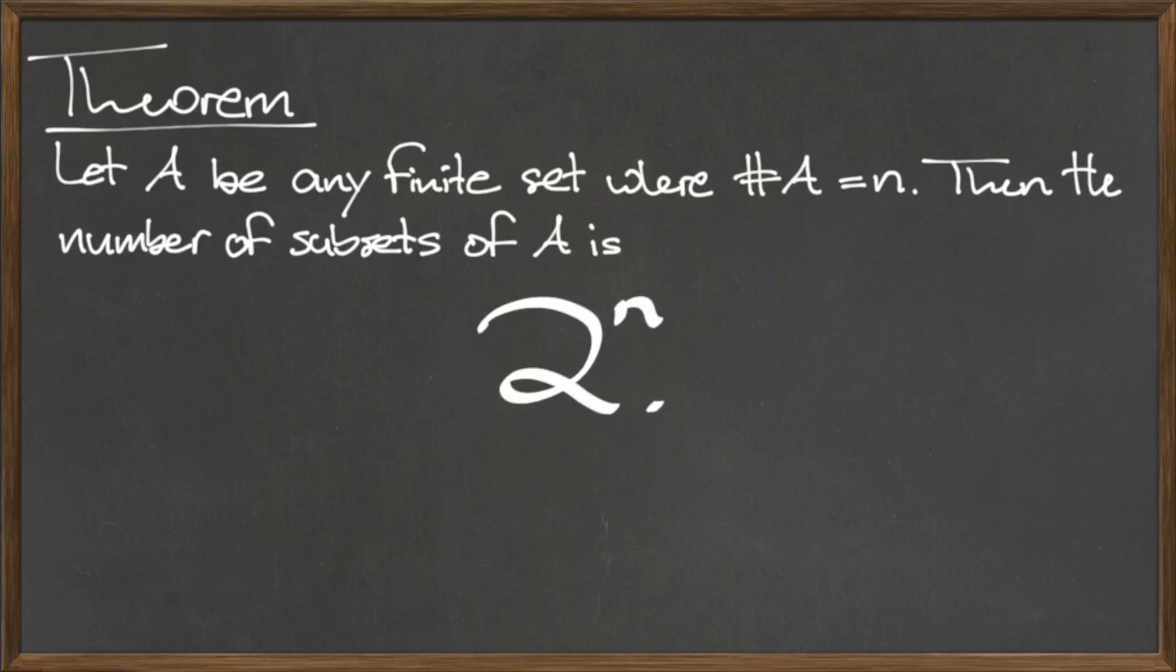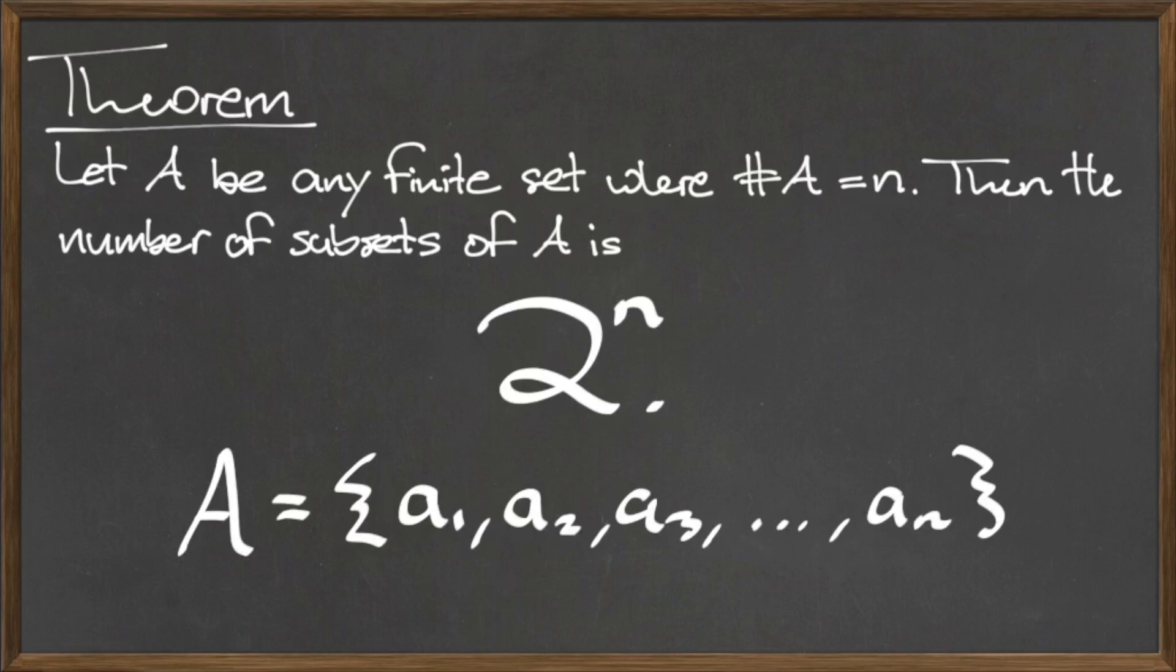To visualize how this works, consider the following set A. The elements of this set are labeled a1, a2, a3, all the way up through an. So, there are n elements in this set, which means that the cardinality of A is equal to n.